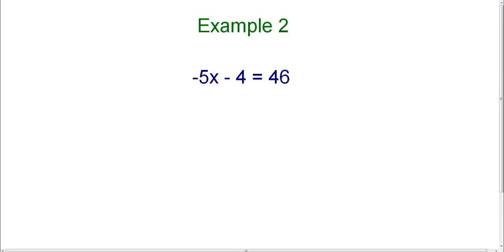This is a two-step equation because there are two steps that we need to perform in order to get x by itself. X is the variable, and that's what we're solving for. So we want to get it by itself on the left-hand side of the equation.